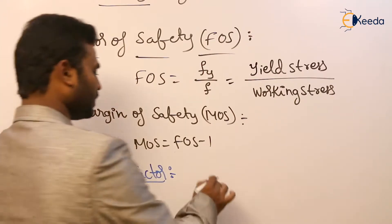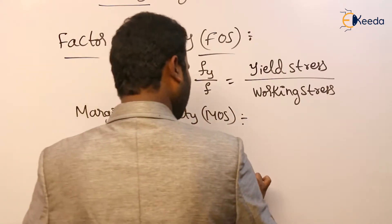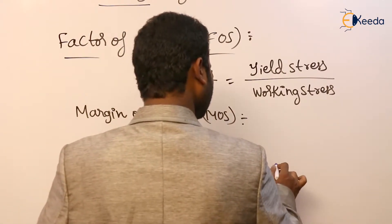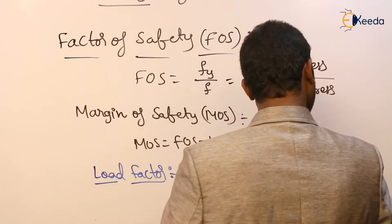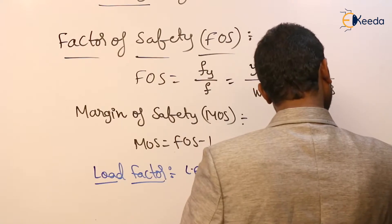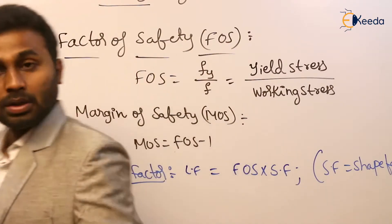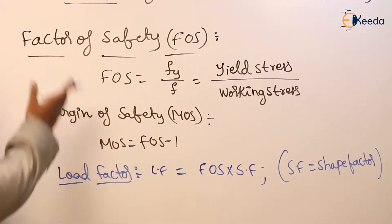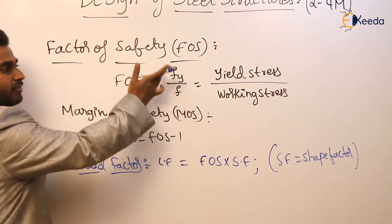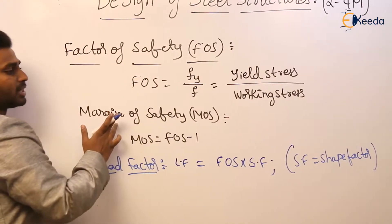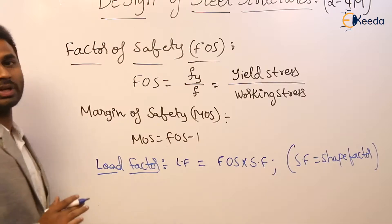One more definition: load factor. Load factor is represented as LF. The load factor is nothing but factor of safety multiplied by shape factor. So factor of safety is FY by F, margin of safety is factor of safety minus one, and load factor LF is equal to factor of safety into shape factor.